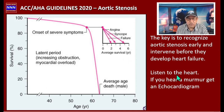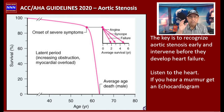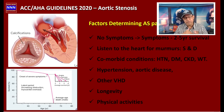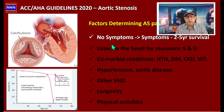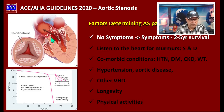Always listen to the heart — preferably on the second right intercostal space. If you hear a murmur, send this patient for cardiac evaluation. We need to look for symptoms; if vague symptoms are combined with an unexpected heart murmur, these two pieces need to be put together. An echocardiogram is a must to determine the presence of aortic valve narrowing and perhaps calcification.